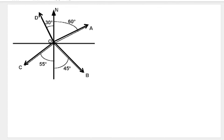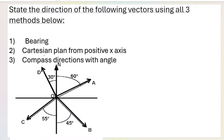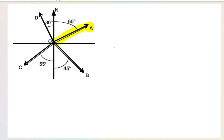Starting off with vector A. I know this diagram looks confusing — there's a lot going on — but let's focus on A, this one over here. Ignore the other vectors. We're going to be using these three methods to state the direction: bearing, Cartesian plane from the positive x-axis, and compass directions with angle. Let's start with bearing.